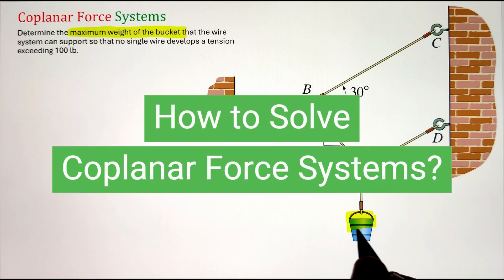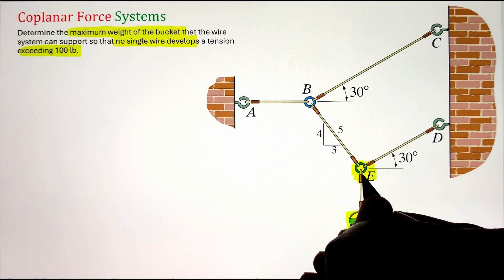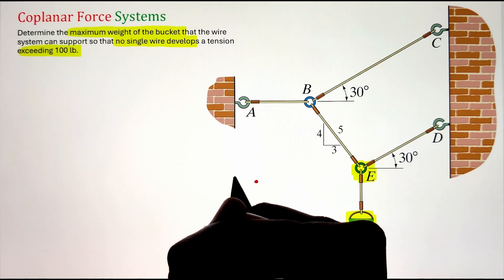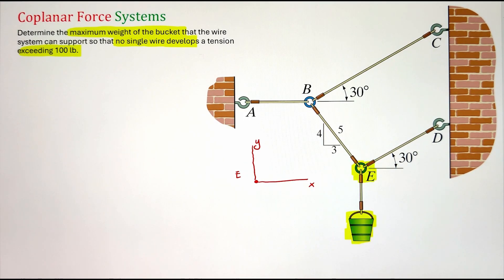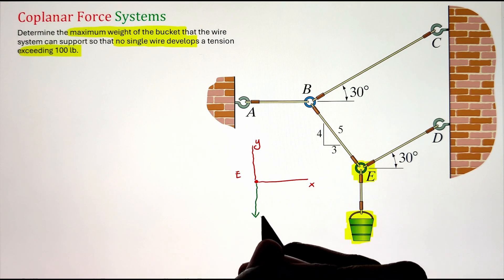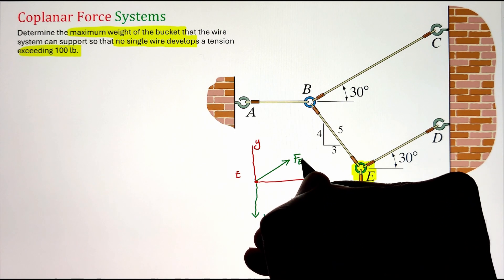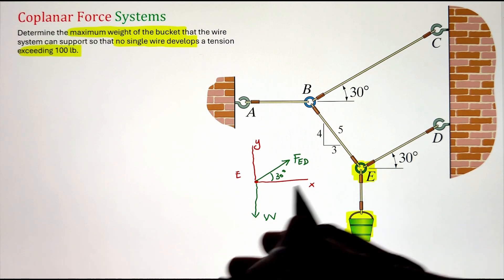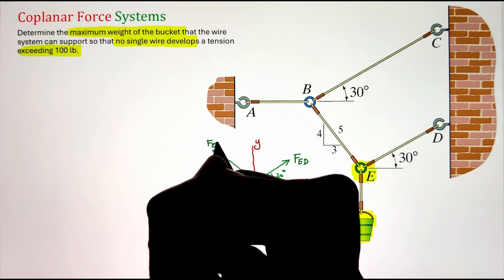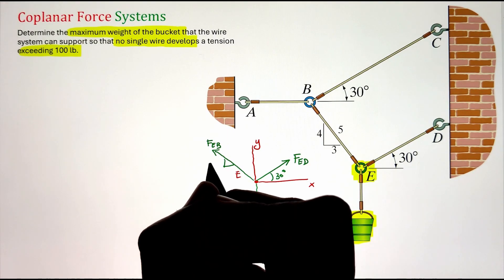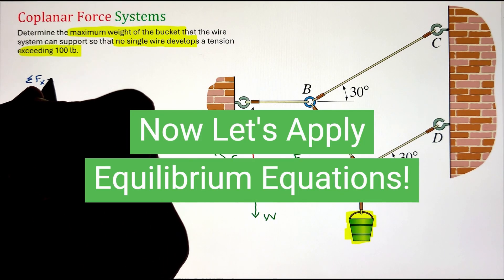In order to figure out the maximum weight of the bucket that the wire system can support so that no single wire develops a tension exceeding 100 pounds, we can solve this problem by identifying the tension in each wire with relation to the weight of the bucket. To start, let's look at joint E where the bucket is attached. We will develop our free body diagram for that joint by placing the origin at the joint itself. The weight of the bucket acts vertically downward given by W, while a wire goes from joint E to D making an angle of 30 degrees with the horizontal. Finally, we have a wire going from E to B, whose direction is given by a right angle triangle with a base of 3, perpendicular distance of 4, and hypotenuse of 5.